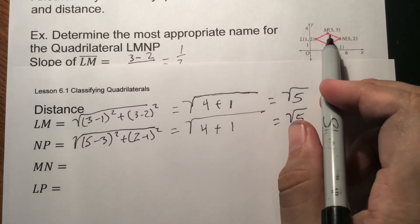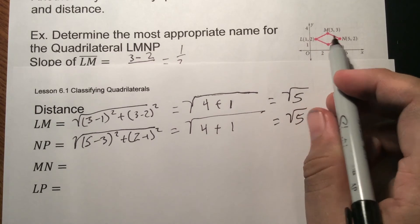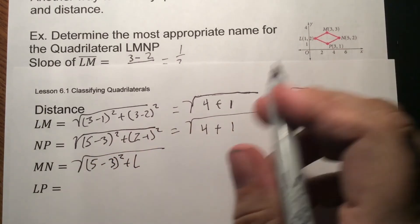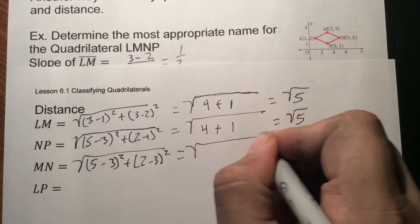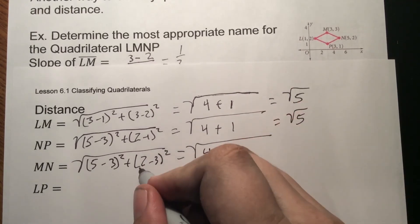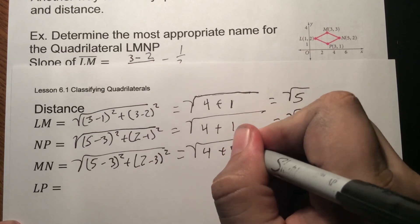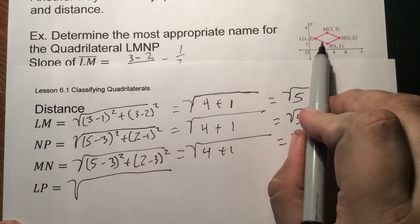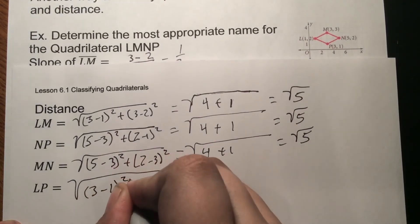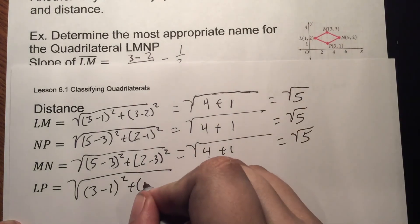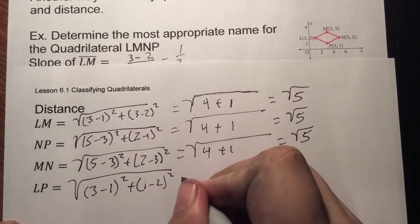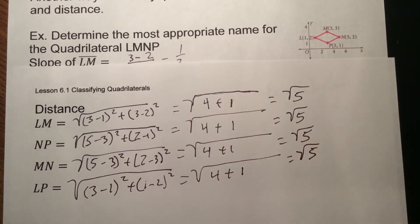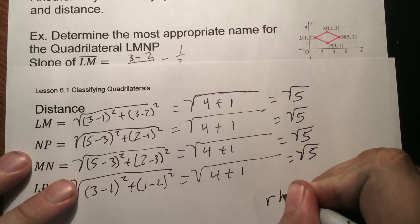Continuing with MN: √((5−3)² + (2−3)²) = √(4+1) = √5. And finally LP: √((3−1)² + (1−2)²) = √(4+1) = √5. All four sides are equal, and since we already know it's a parallelogram, we can call this a rhombus.